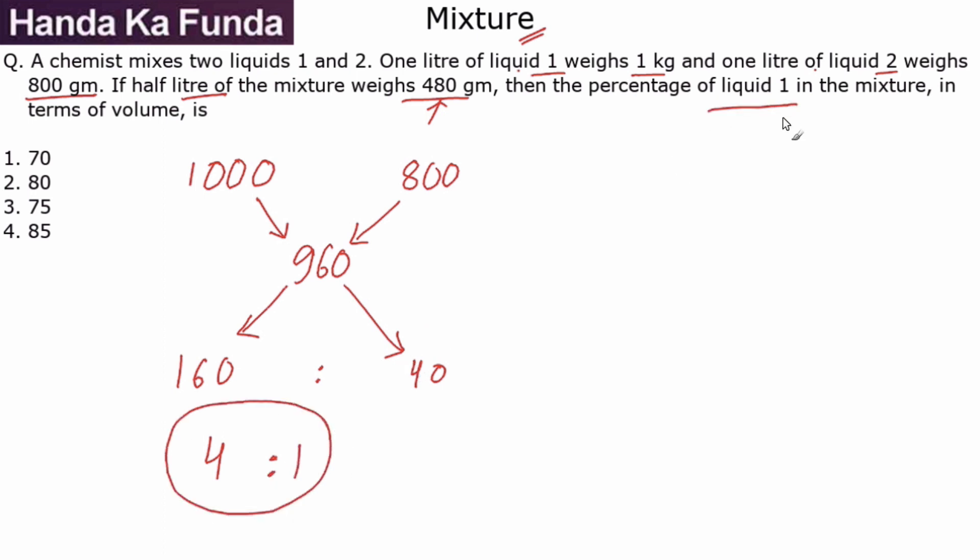We are asked the percentage of liquid 1 in the mixture. If they are mixed in the ratio of 4 is to 1, liquid 1 is 4 by 5 of the total, or it is 80 percent, which is given to me as option 2.